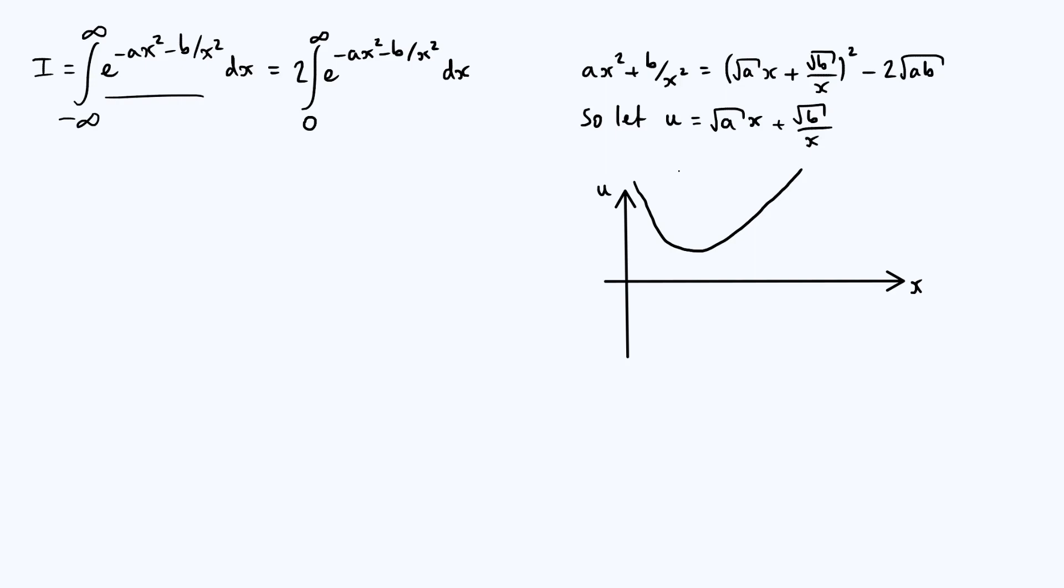Now we can start to see what the problem is, because if we try to come up with the correct limits to use in our transformed integral in terms of u, we're integrating from x going from 0 up to infinity. But when x is 0, u is infinite up there, and when x is infinite, u also becomes infinite. And so your limits of integration, if you don't think carefully about it, you'll just end up putting from infinity to infinity. And the complication is that you've got this turning point down here.